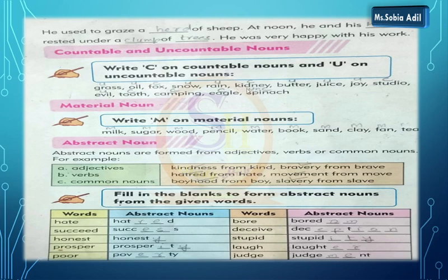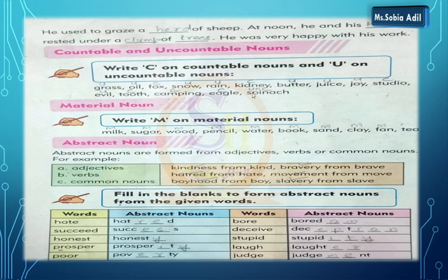Kidney — yes, it's countable — write C. Butter — V-U-T-E-R — you cannot count butter — uncountable, write U. Juice — J-U-I-C-E — uncountable, write U. Joy — J-O-Y — uncountable. Studio — S-T-U-D-I-O — it's countable, write C. Evil — E-V-I-L — it's a feeling, emotions jo hote hain, it cannot be counted — uncountable, write U. Tooth — T-O-O-T-H — countable, write C. Camping — C — countable. Eagle — E-A-G-L-E — you can count it — countable, write C. Spinach — you cannot count spinach — it's uncountable, write U.